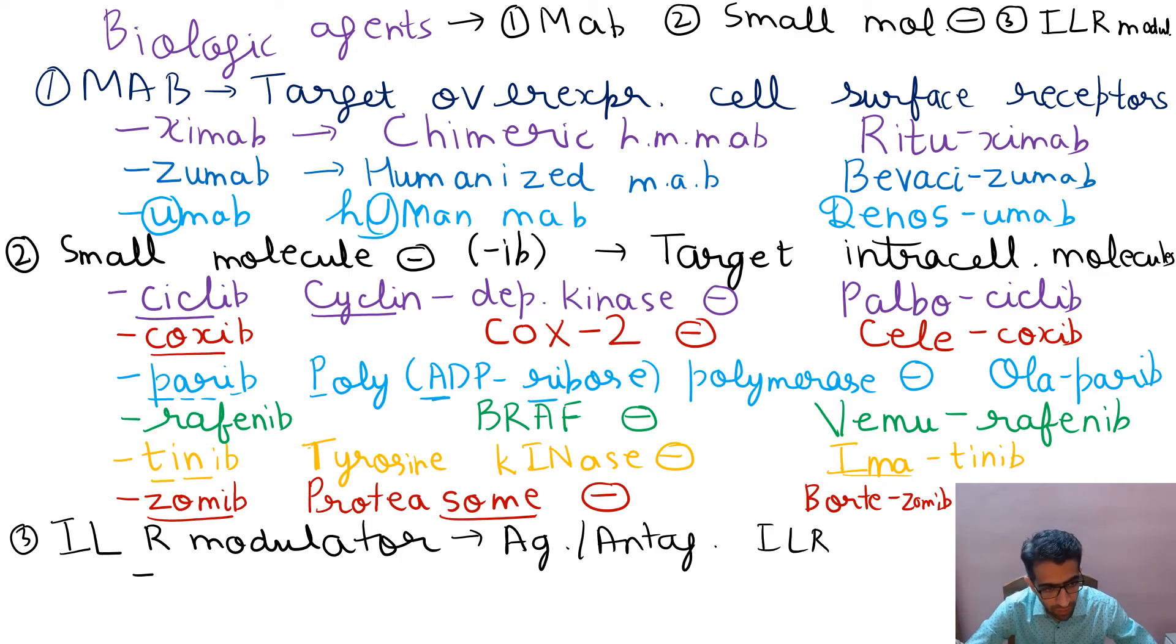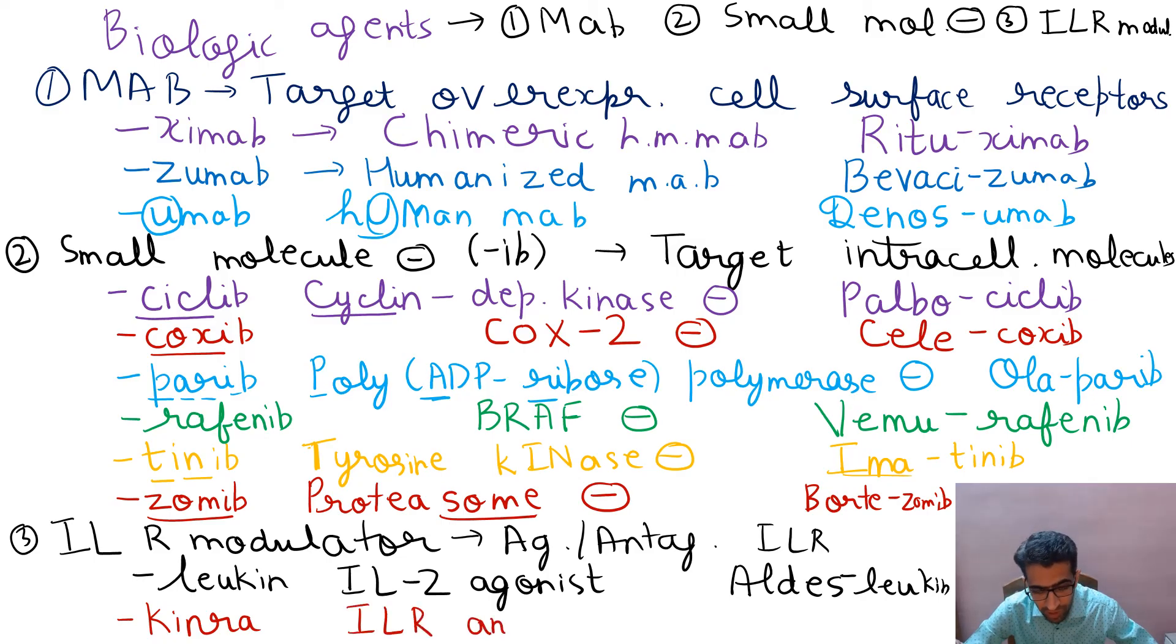Like if there is the suffix which ends in leukin, it is an interleukin. It will be an agonist if it ends in leukin, like aldesleukin. And if it ends in kinra, which is an interleukin receptor antagonist, in which disease do we give it? It is an autoimmune disease. Please let me know in the comment section. It is anakinra. So this finishes your USMLE, PLAB, NEET PG and FMG revision.